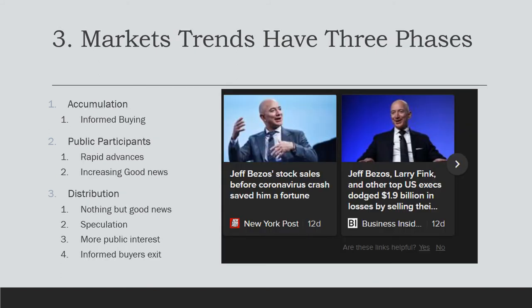The next part is very important: market trends have three phases. Dow considered the most important trend to be the primary trend — the tides of the market. He believed the primary trend consists of an accumulation phase, a public participation phase, and a distribution phase. The accumulation phase consists of informed buyers, industry insiders, and those with large fundamental knowledge of a particular market. They see changes sure to cause gains in the future, so they purchase and wait.